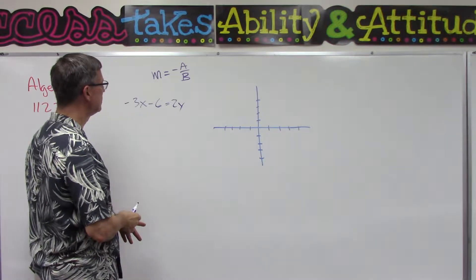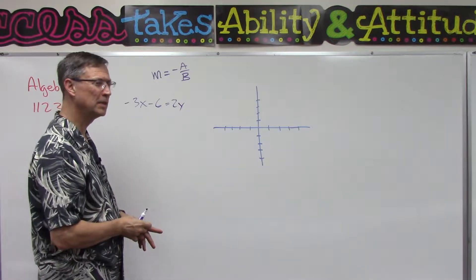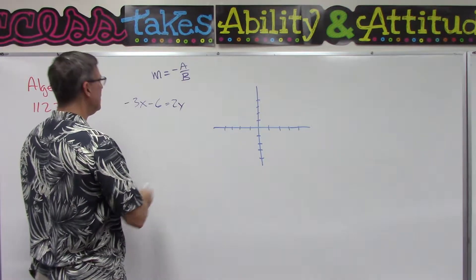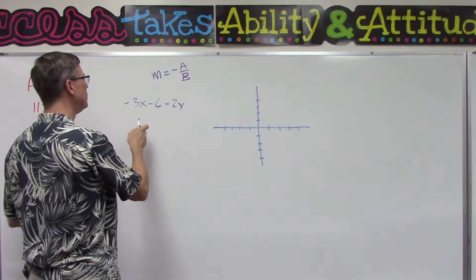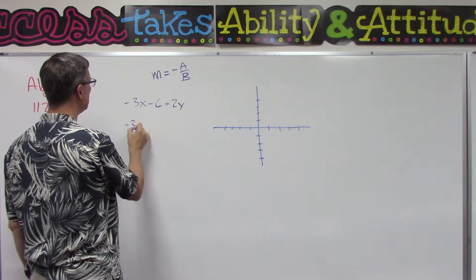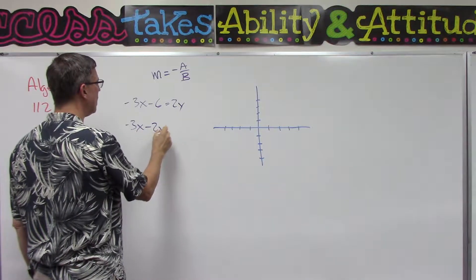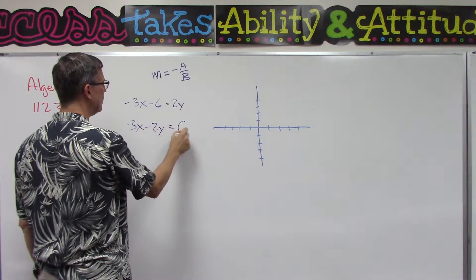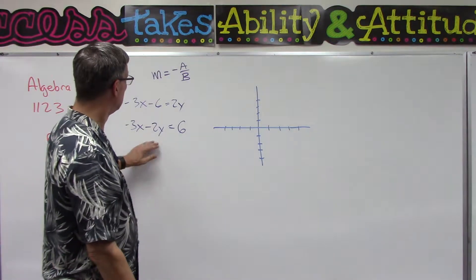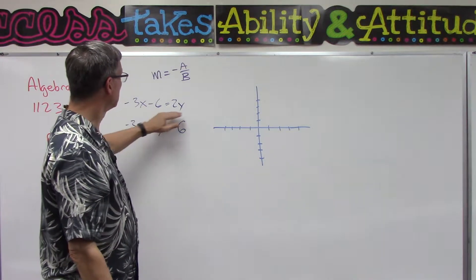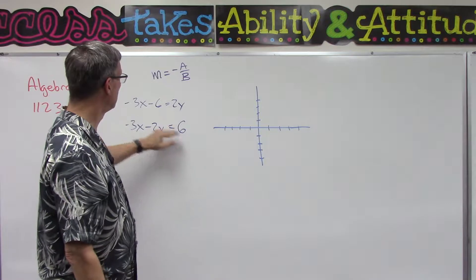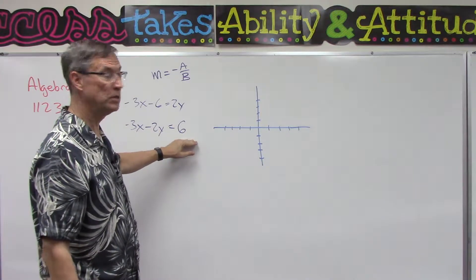I need to bring everything over here to the left. I'm going to leave the negative 3x, change sides, change signs. So negative 2y, and then take the 6 over here to this side. We kept the negative 3x, brought the 2y over, brought the 6 over. Change sides, change signs.